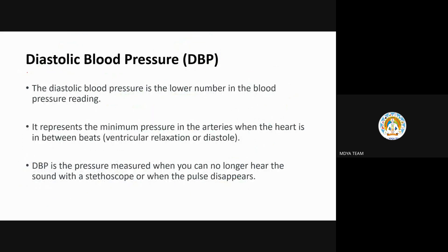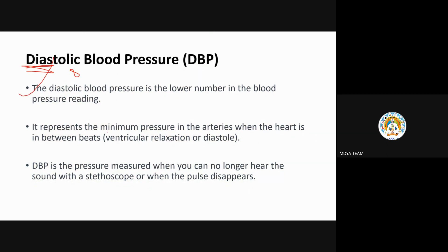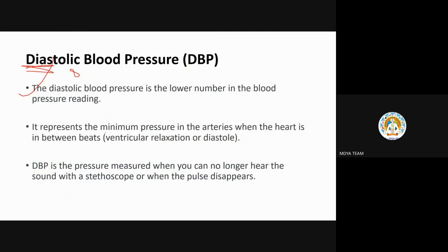Diastolic — the word itself implies decreasing or lower number, which is 80. Diastolic blood pressure is the lower number in the blood pressure reading. It represents the minimum pressure in the arteries when the heart is between beats. At the time of the beat it is systolic; in between beats it is diastolic.